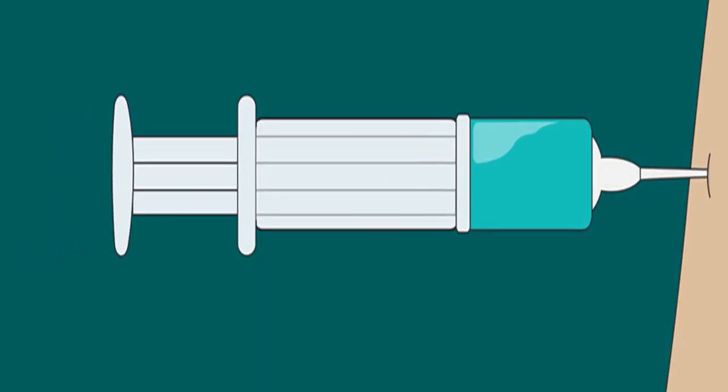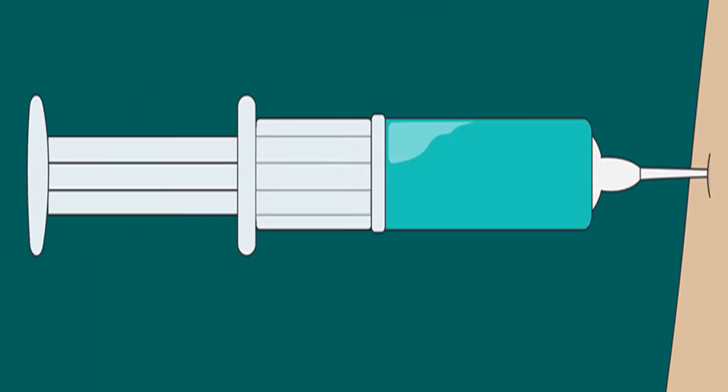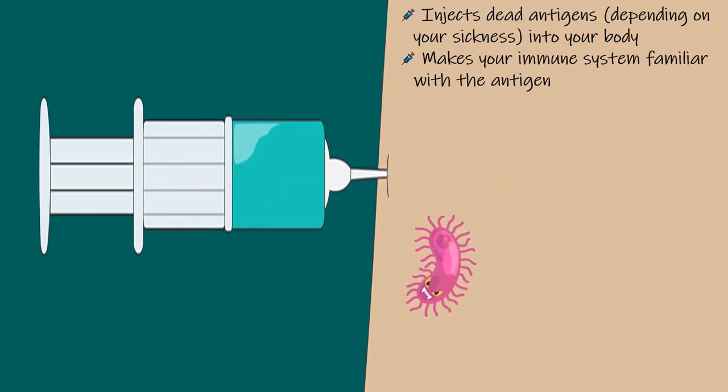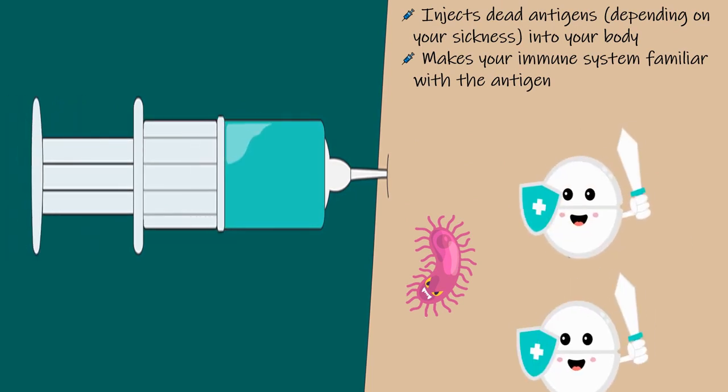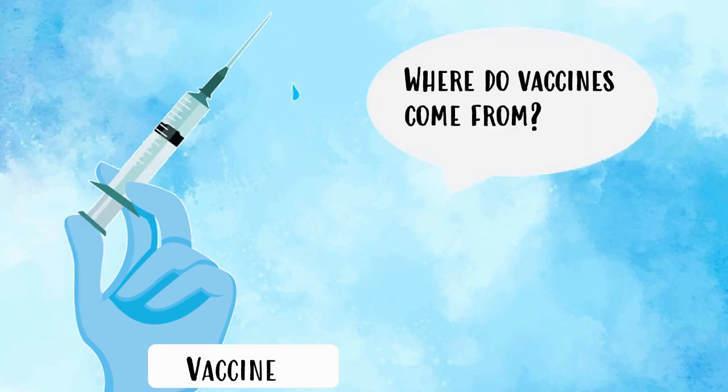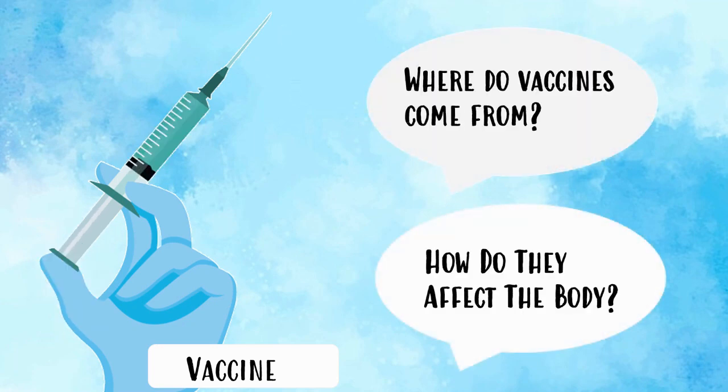A vaccine is injecting a substance into your body. Not a helpful antibody, which is a protein, but an antigen. It does this so it can test your immune system by preparing it to fight antigens it may encounter later. But have you ever wondered where vaccines come from and how they affect the body?